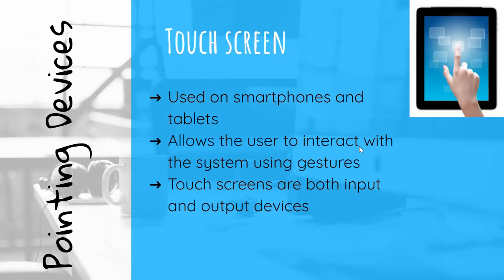Touchscreen: Used on smartphones and tablets, it allows the user to interact with the system using gestures such as pinch, tap, and swipe. Touchscreens are both input and output devices — input because you can use gestures and tap like a mouse or keyboard, and output because it is a screen you can see things on.